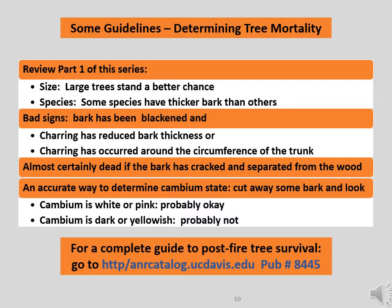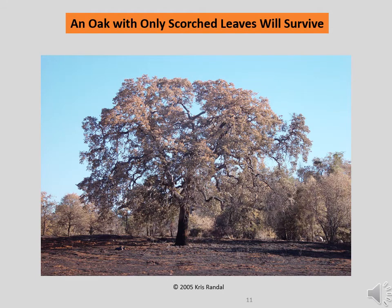To get a complete treatment of how to diagnose a burnt tree, we recommend that you access http://anrcatalog.ucdavis.edu, publication number 8445. The ground around this tree was burnt by a low-intensity fire, perhaps leaves and dry grass, and a bit of brush. The rising heat from the fire caused the leaves to turn brown and they will soon fall off. This is similar to the summer deciduous symptom described earlier. In all probability, the tree will soon lose its leaves and will sprout new ones in the following spring. We can then call it a healthy tree.